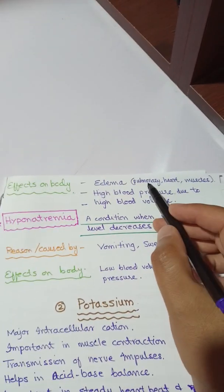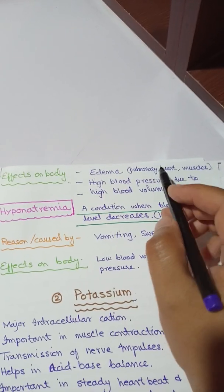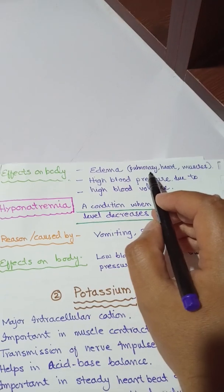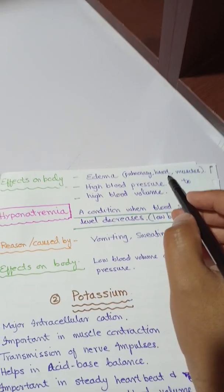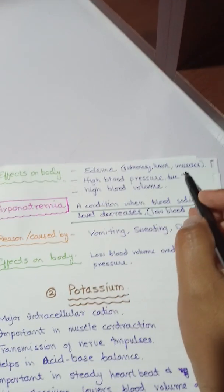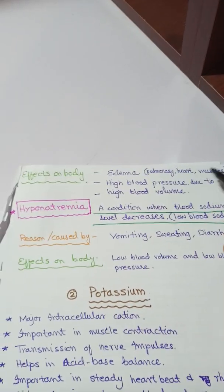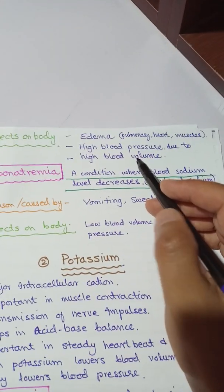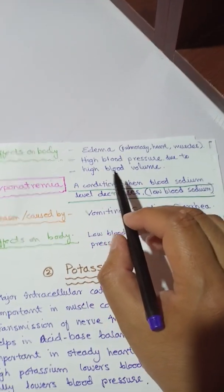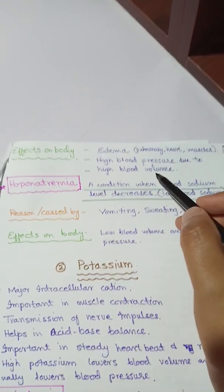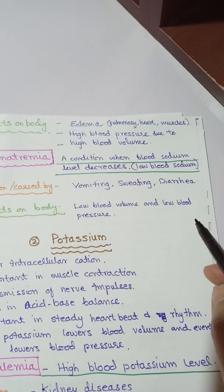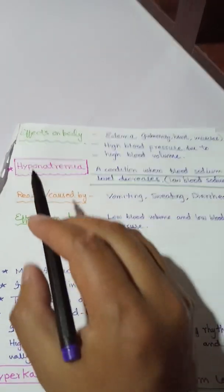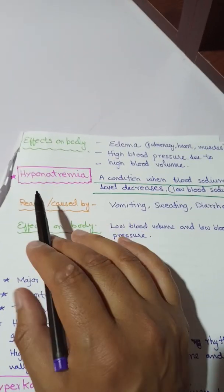In pulmonary organs it is called pulmonary edema, in the heart it is called cardiac edema, and in muscles it is muscular edema. So there are different types of edema because of high sodium level. The second effect is high blood pressure — if sodium level increases in our body it causes high blood volume, and because of that high blood pressure occurs.